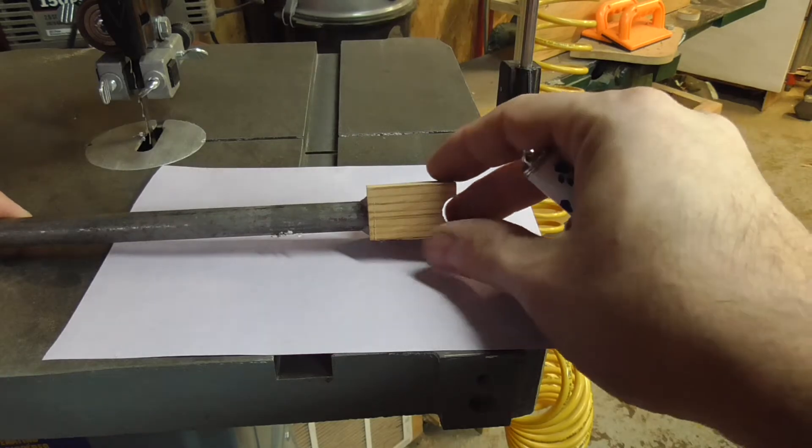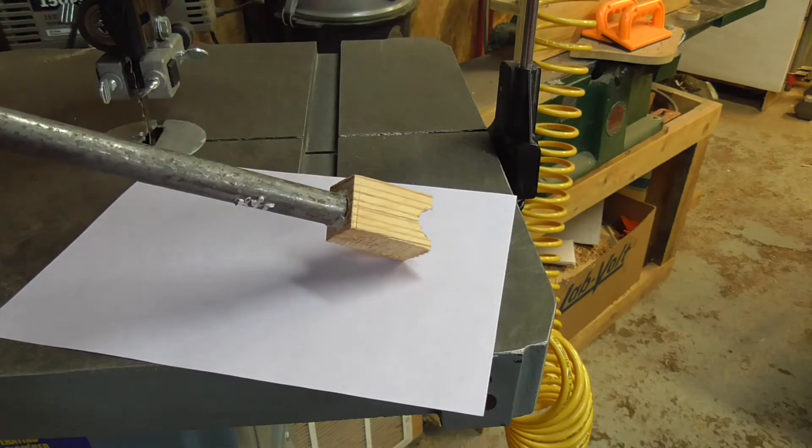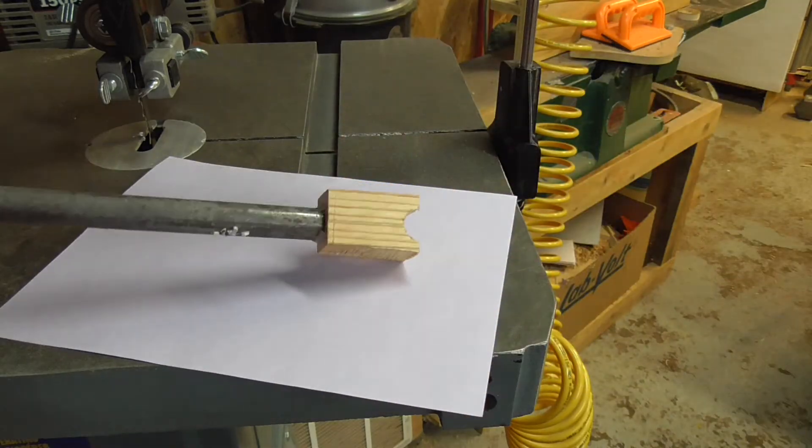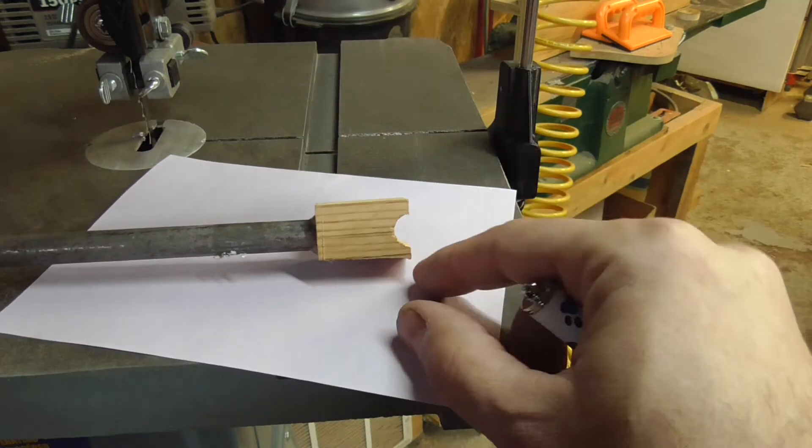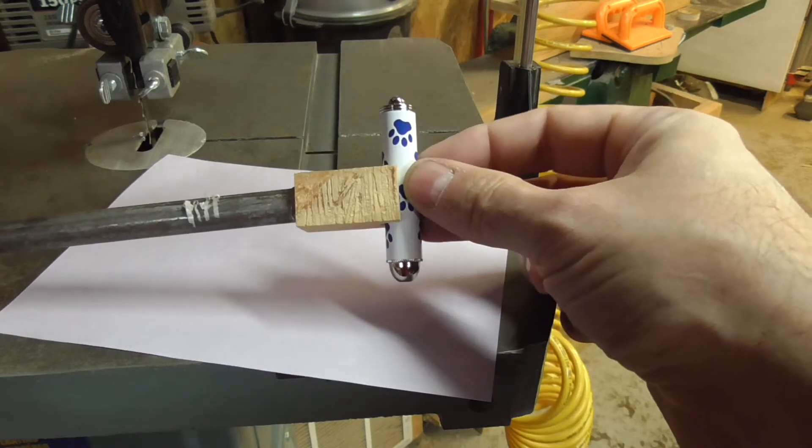So I simply drilled a hole in the block of wood and I used hot glue because I wanted this thing to be reversible and this is how the laser will be fixed.